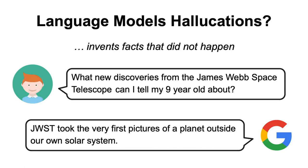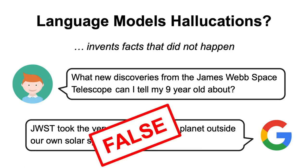Which may sound plausible at first glance, but it's in fact inaccurate since the first picture of exoplanets were not taken by JWST but by the European Southern Observatory Very Large Telescope in 2004. This is a case of factual hallucination where the language model describes, in a credible way, things that didn't happen, and although those responses may look reasonable and coherent, the facts behind them are actually false.